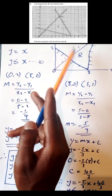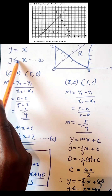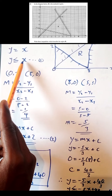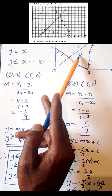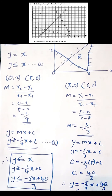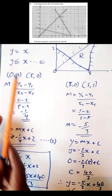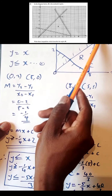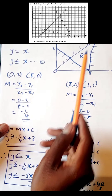According to the shaded region, the inequality for y = x will be y ≤ x. It is 'less than' because the region we want is on the lesser side of the line. It is 'less than or equal to' because the line is a borderline — it is not dotted.